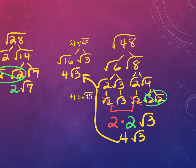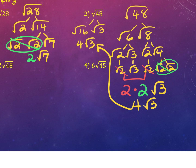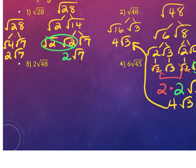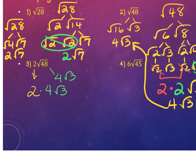For number 3, notice we already broke down 48, so we know it simplifies to 4 square root 3. Now I have 2 — already outside — times 4 square root 3. Everything outside gets multiplied, and anything left under the radical stays there.